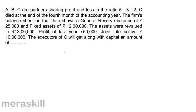Next example. A, B, C are partners sharing profit and loss in the ratio 5:3:2. C died at the end of the 4th month of the accounting year. The firm's balance sheet on that date shows a general reserve balance of 25,000 and fixed assets of 12 lakh. The assets were revalued to 13 lakh. Profit of the last year was 50,000. Joint life policy: 10 lakh. The executors of C will get, along with capital, an amount of — what will he get? He'll get a share in the general reserve of 25,000. C has died; the ratio is 2 by 10, so he will get 2/10 of 25,000, which is 5,000.